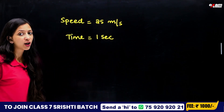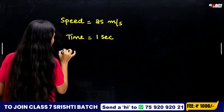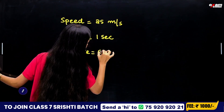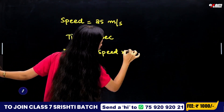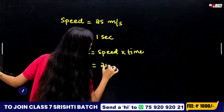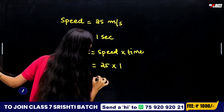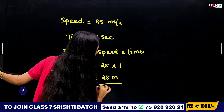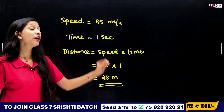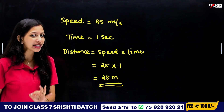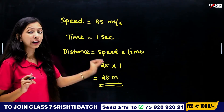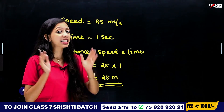How much distance can we travel? Distance equals speed into time. Speed is 25, time is 1 second. So the distance is 25 m. Because the speed is meter per second, 25 m is the distance.